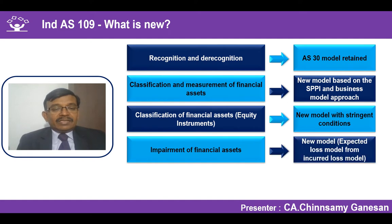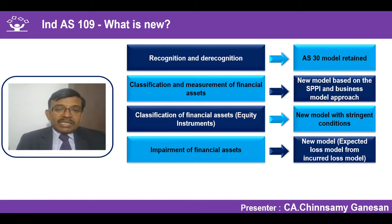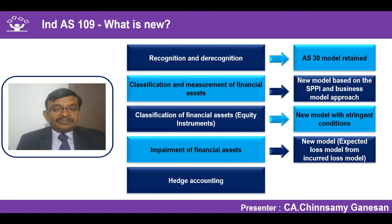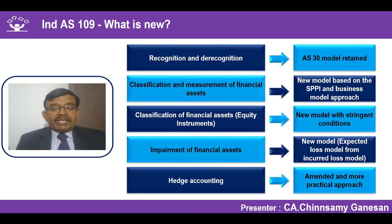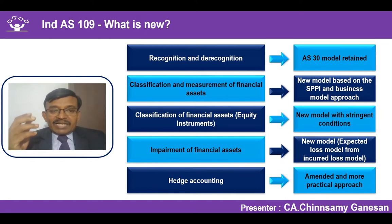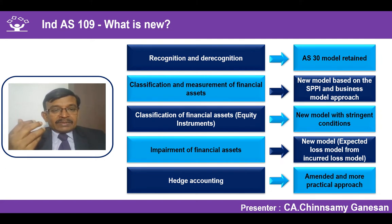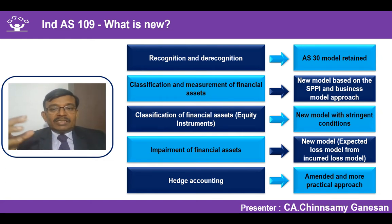For impairment of financial assets, there is a new model called the Expected Credit Loss model, which we will discuss as part of the next video - along with reclassification, impairment, and de-recognition of financial assets. Hedge accounting has a simplified and more practical model introduced in IndAS 109; we will discuss that as a separate video, because hedge accounting and derivatives are complex and require many worked-out problems and case studies. The entire IndAS 109 is split into three videos.